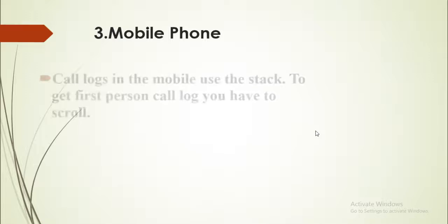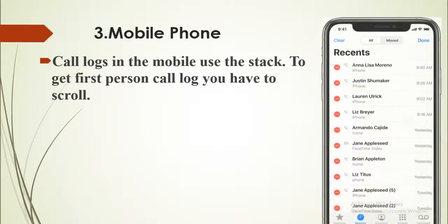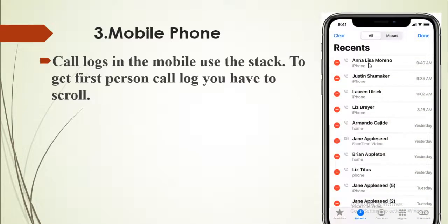The next example is a mobile phone. If you want to check the first caller, you have to scroll down because the phone shows the most recent call at the top of the stack. At the bottom you will find the first call. So you scroll down to check the first call, and you always get the most recent data at the top of the stack.